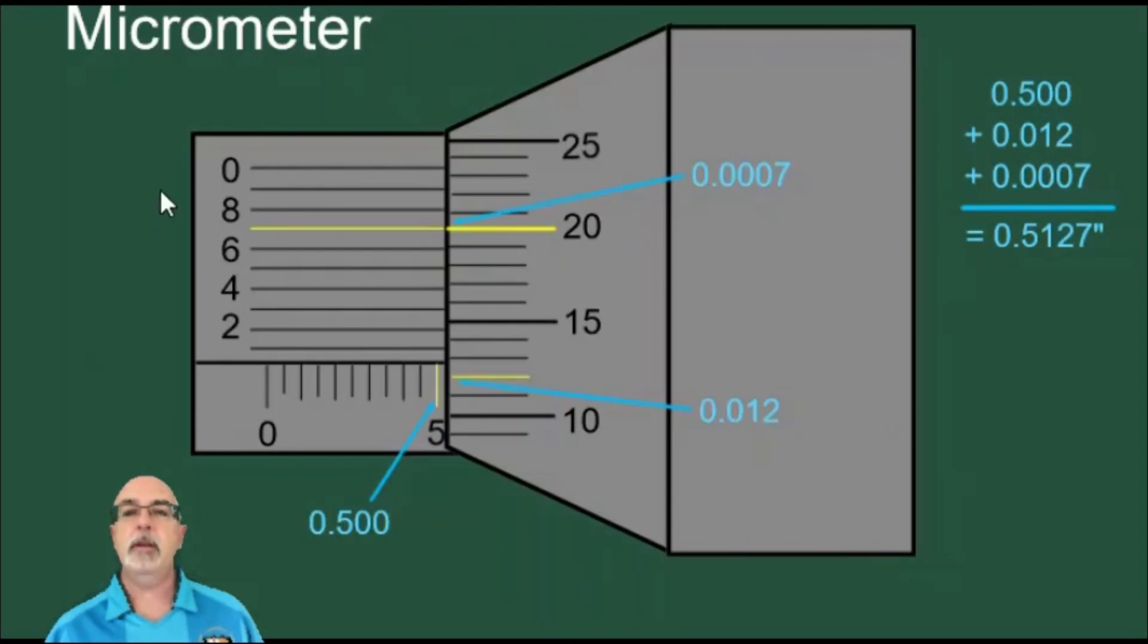And then finally we use the Vernier scale to find the lines that match up to get us the last digit that we need. In this case 0.0007. We add these decimals together and we have our final reading.